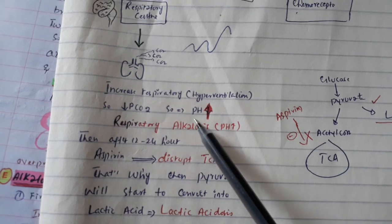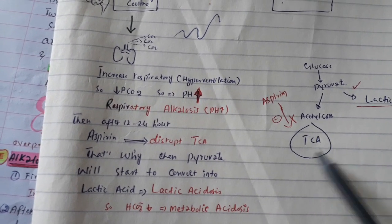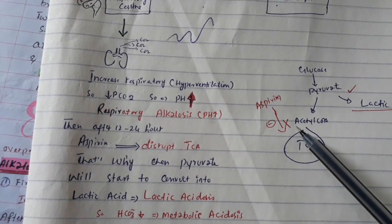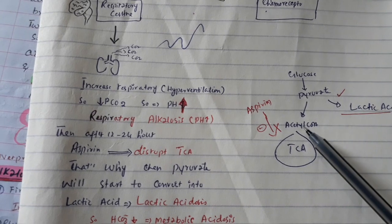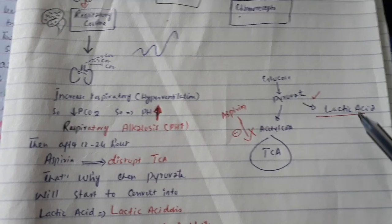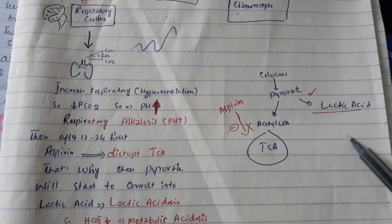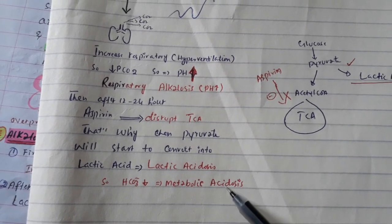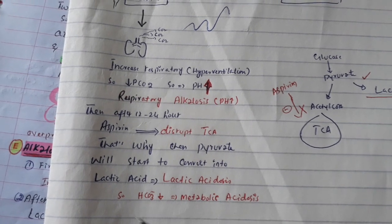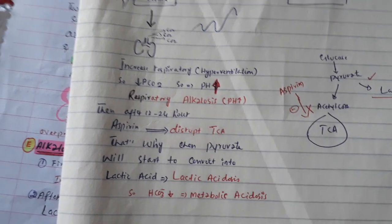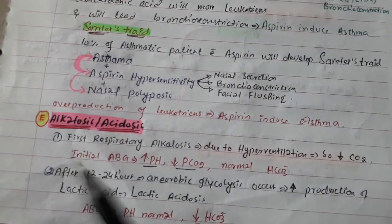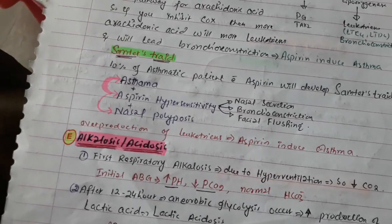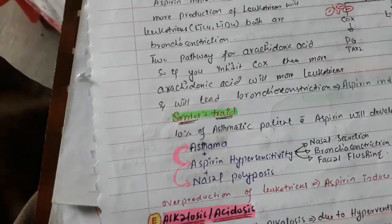Because more lactic acid is being formed through disrupted metabolism, we call this metabolic acidosis. Bicarbonate decreases as a result. So aspirin first causes respiratory alkalosis, and then after 12 to 24 hours it causes metabolic acidosis.